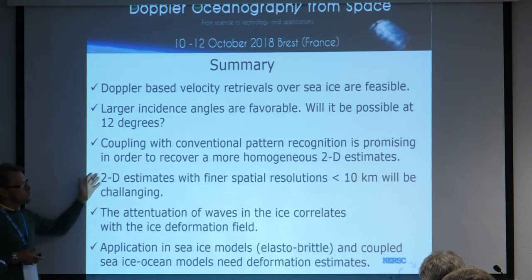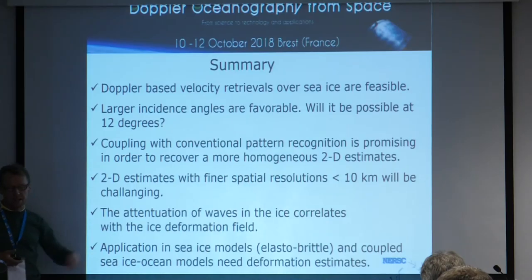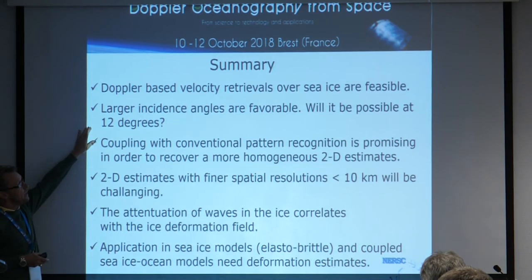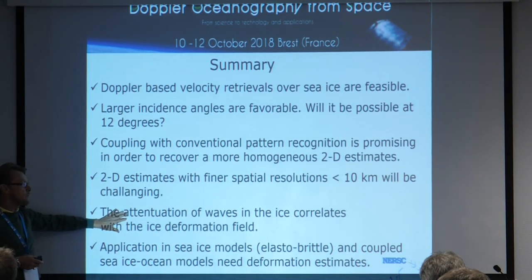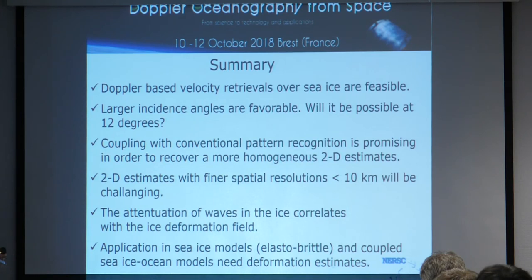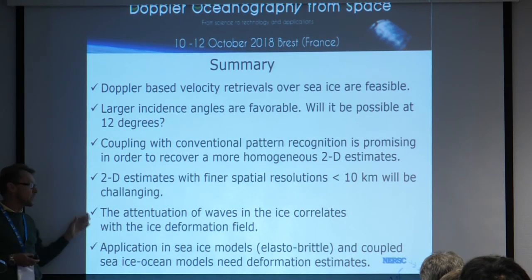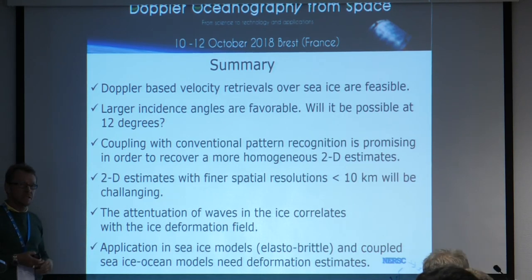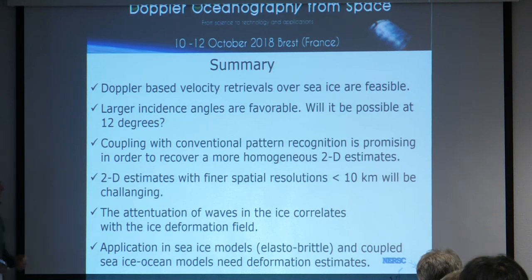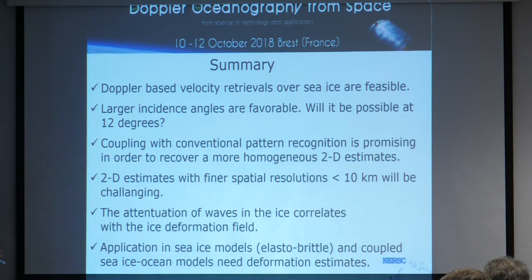The spatial resolution will probably not be possible at scales below 10 kilometers. The use of wave information in the sea ice field may support findings from the velocity field and can also illustrate deformation. The wave field can, to some extent, support or assess where deformation is very strong. Sea ice models are ready to use this information, particularly the new elastoplastic brittle sea ice models, which are replacing viscous-plastic models and are able to simulate leads. Coupled sea ice-ocean models clearly need this.